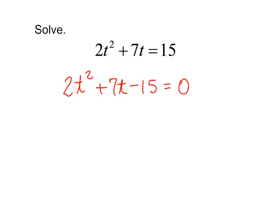This problem takes a little more effort to factor. Since I have a coefficient other than 1 in front of the t squared. But after a little bit of work, I decide to use 2t minus 3 and t plus 5.